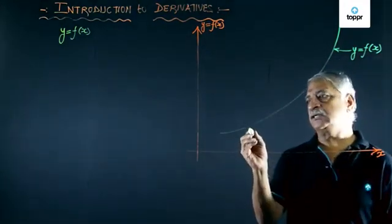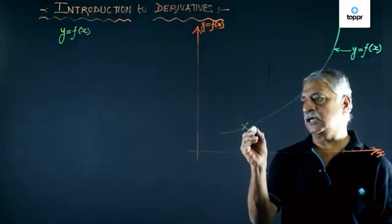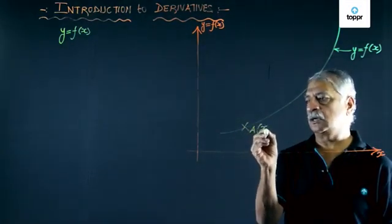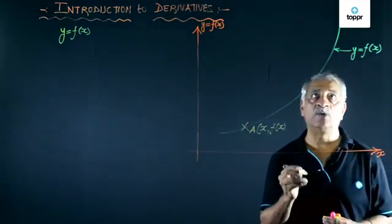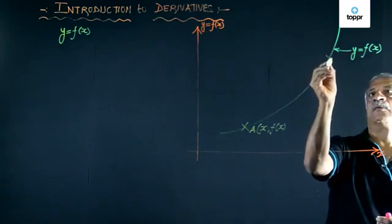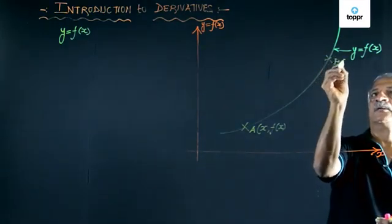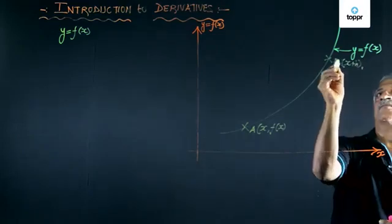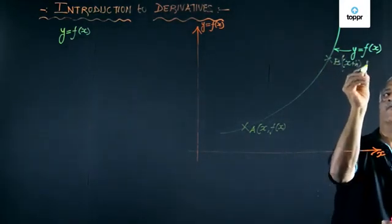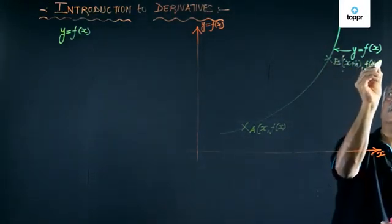Now let us consider two points A, which we call x and f of x, and we take point B as x plus h, f of x plus h.